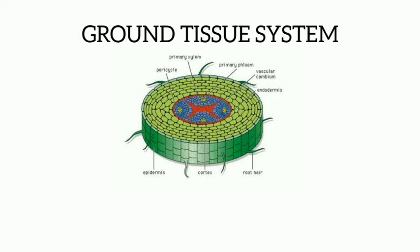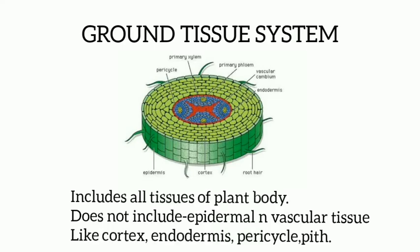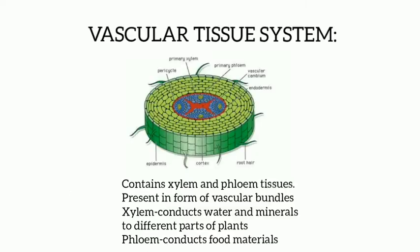Next, we move on to ground tissue system. Ground tissue system includes all tissues of the plant body except epidermal and vascular tissues, like cortex, endodermis, pericycle, and pith. Next, we move on to vascular tissue system. Vascular tissue system consists of xylem and phloem tissues. They are present in the form of bundles called vascular bundles. Xylem transports water and minerals to different parts of the plant and phloem transports food materials to different parts of the plant.